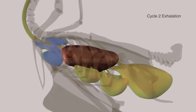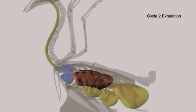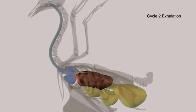During the second exhalation, the anterior sacs contract. The air is then driven out into the trachea, where it passes up and out of the nostrils.